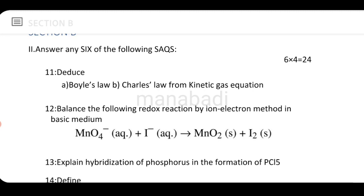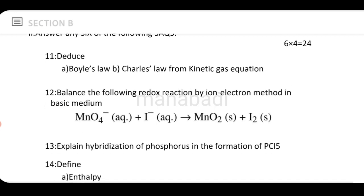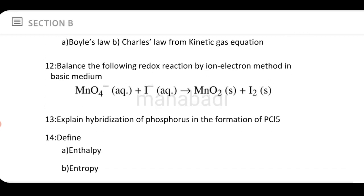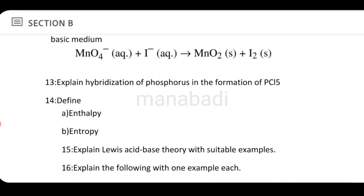From the kinetic gas equation, deduce Boyle's law and Charles' law — provide the derivation. Next: Balance the following redox reaction by the ion-electron method in basic media. Also: Explain the hybridization of phosphorus in the formation of PCl₅.